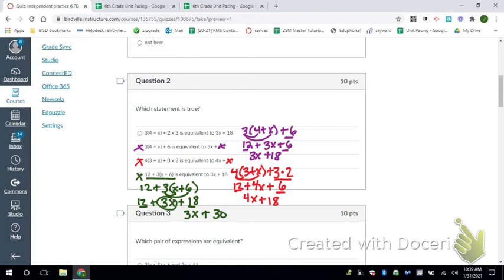Let's try the last one here. Let's go with maybe some orange. So I'm going to have 3 times 4 plus x plus 2 times 3. So 3 times 4 is going to be 12 plus, and then I have 3 times x, that's 3x, plus 2 times 3 is 6.